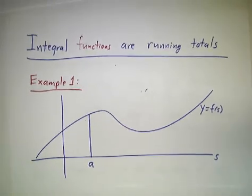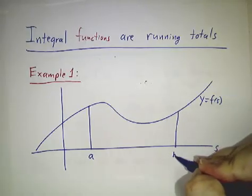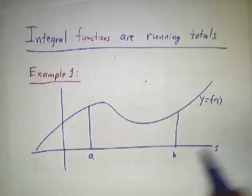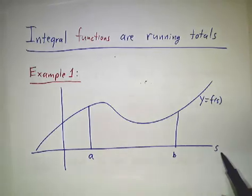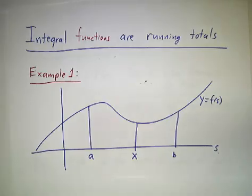Now, an integral function is the running total. I could take the area between a and b and that would be the integral from a to b of f of s ds. Now notice I'm calling the variable s because I want x to be some particular value of s.